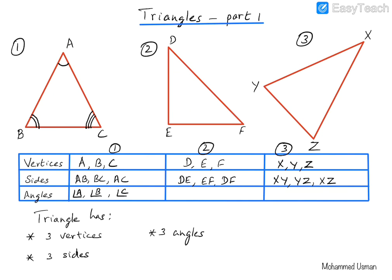For the second triangle, we have angle D. If you notice this triangle, the lines DE and EF are perpendicular to each other, so the angle there is 90 degrees, but we will simply call that as angle E. And the third angle is angle F. So we have three angles: angle D, angle E and angle F.